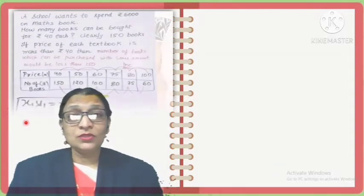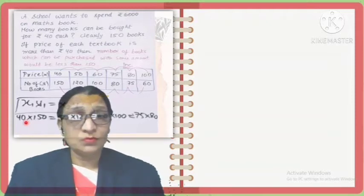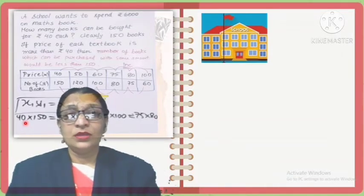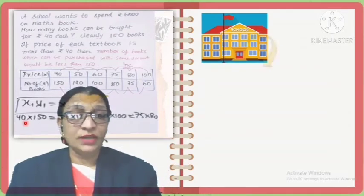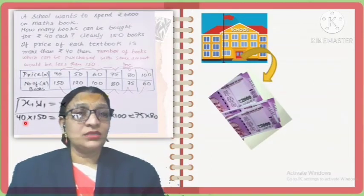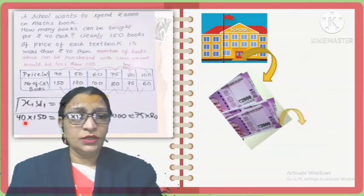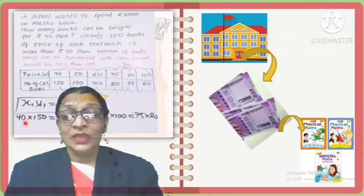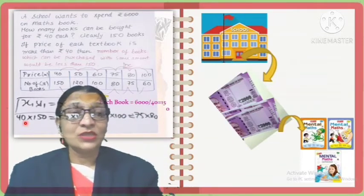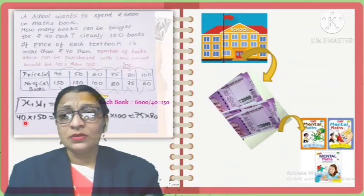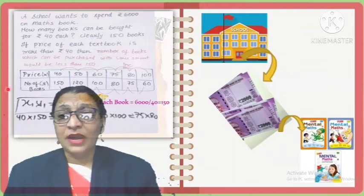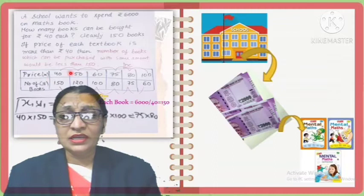A school wants to spend rupees 6000 on mathematics books. How many books can be bought at rupees 40 each? The school wants to purchase mathematics books for student practice, spending rupees 6000. Each book costs 6000 ÷ 40 = 150 rupees, meaning the price of one book is rupees 150.